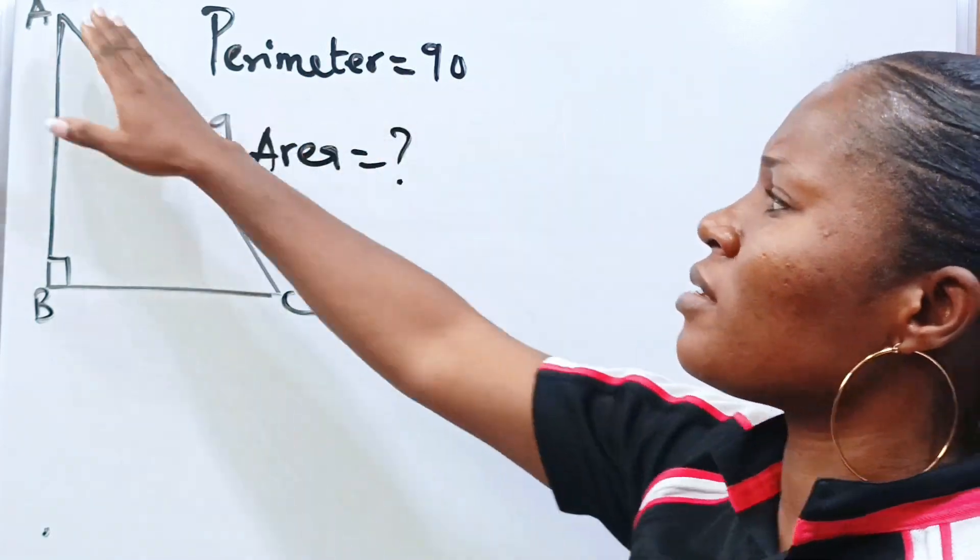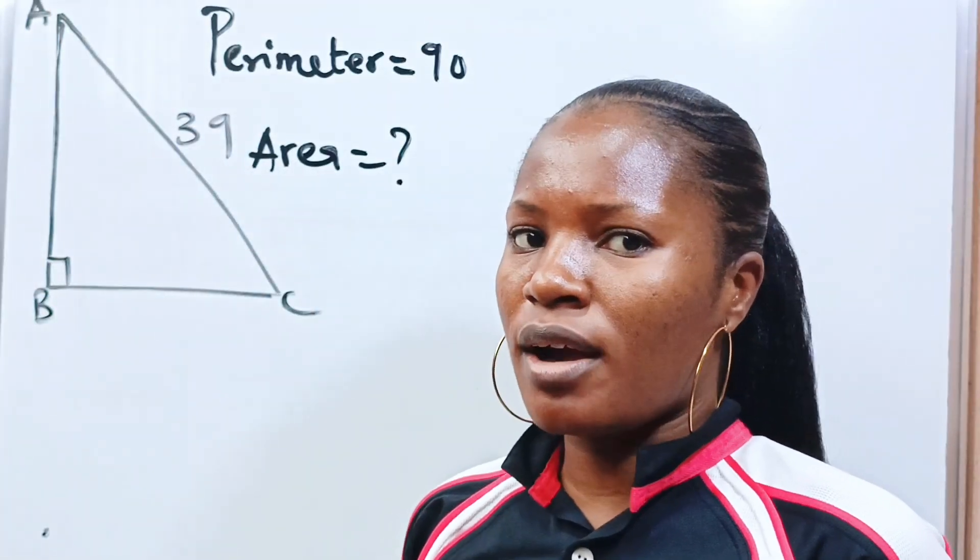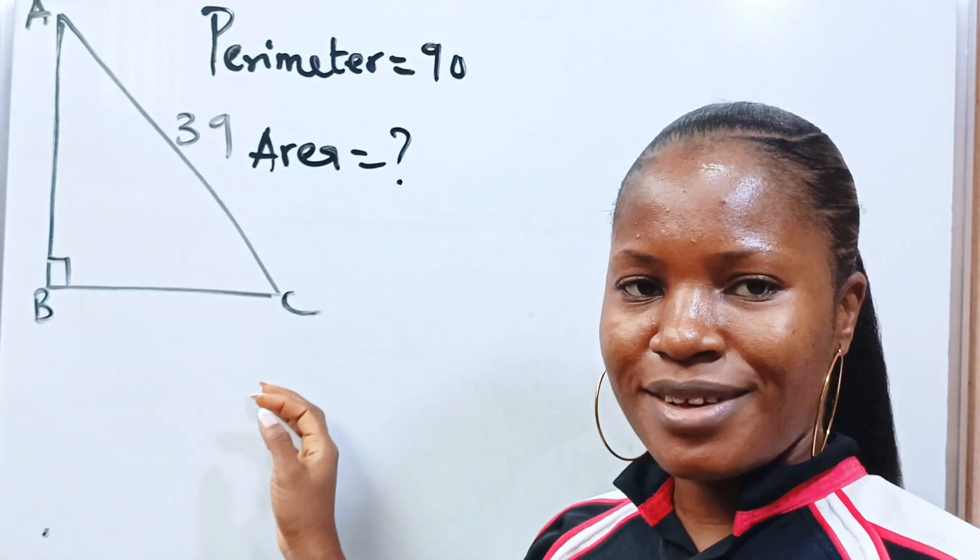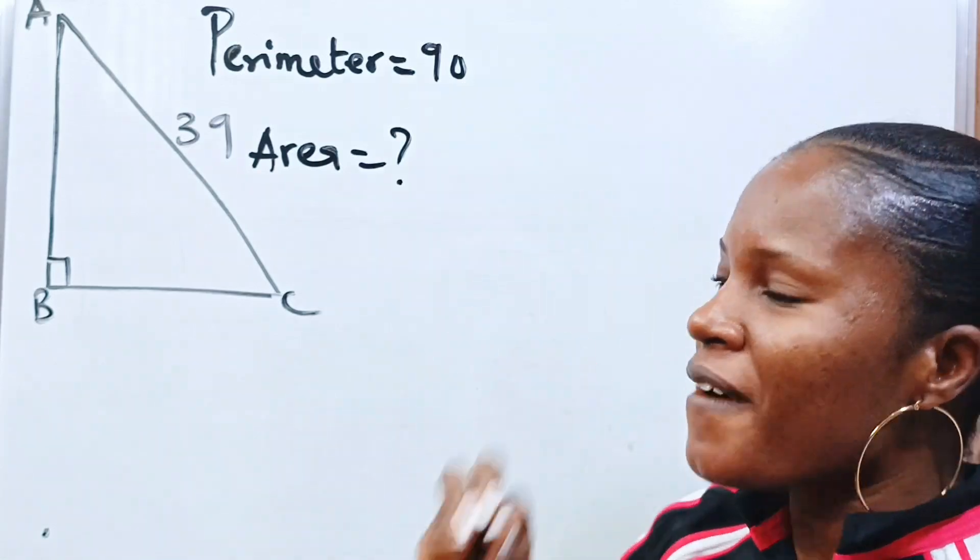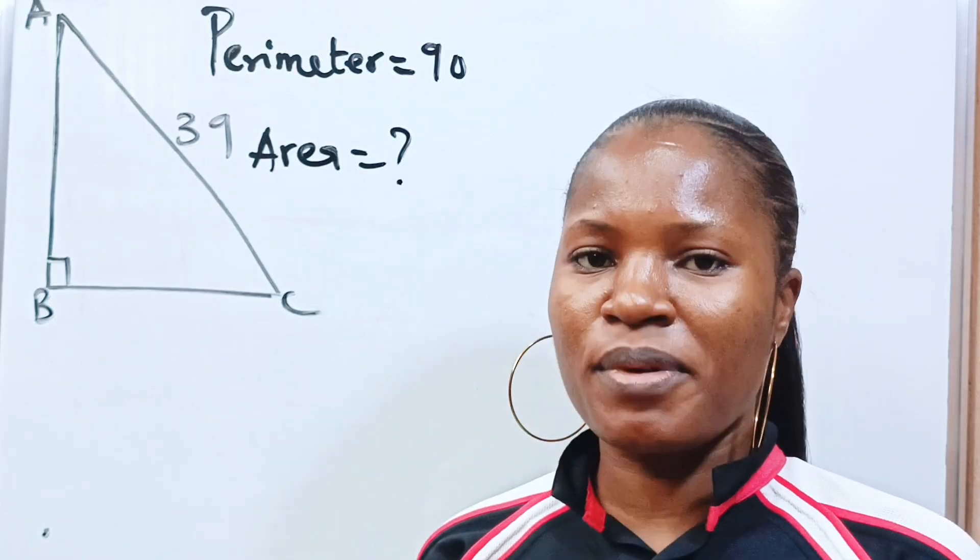Remember that the perimeter of a triangle is the sum of all sides of the triangle. But here we are not giving AB, we are not giving BC. So for the fact that this perimeter is given, we have to find the perimeter.